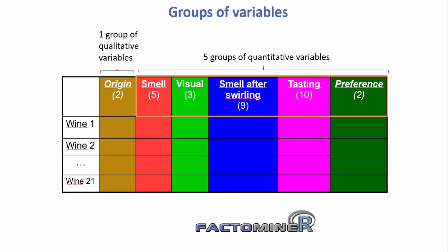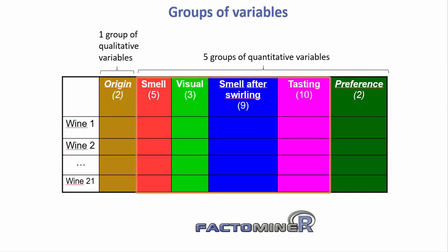And a group on tasting appreciation. The groups for smell, visuals, tasting, and smell after swirling are considered active groups, while the groups for the wine's origin and for tasting appreciation are considered as supplementary groups.